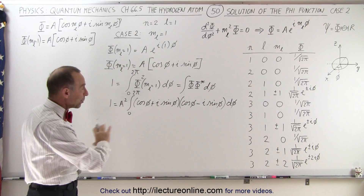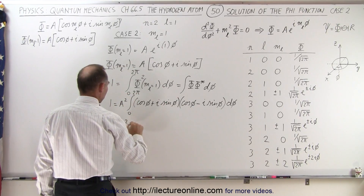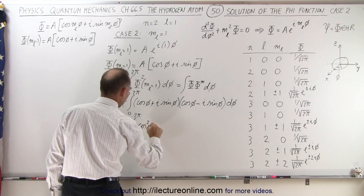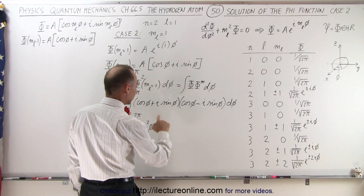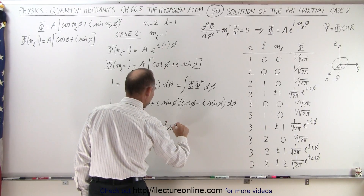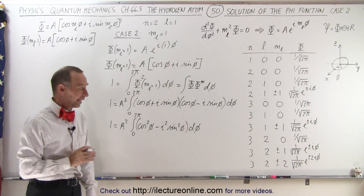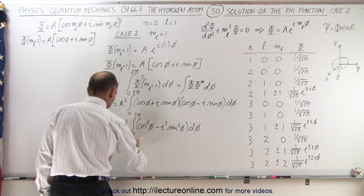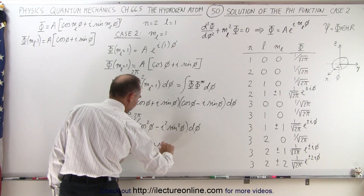When we do that, the imaginary terms will disappear because the middle terms cancel out. We end up with 1 equal to A squared times the integral from 0 to 2π of cosine squared of phi minus i squared times sine squared of phi, all times d·phi. Now, i squared equals negative 1, so that term becomes positive. We then have 1 equal to A squared times the integral from 0 to 2π of cosine squared of phi plus sine squared of phi.